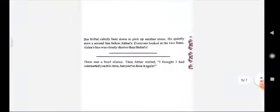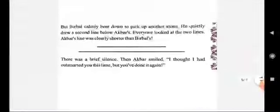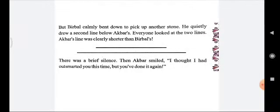Birbal bent down and took up another stone, and he simply drew a second line below Akbar's line. Everyone looked at the two lines. Akbar's line was clearly shorter than Birbal's, and hence Birbal proved his cleverness.